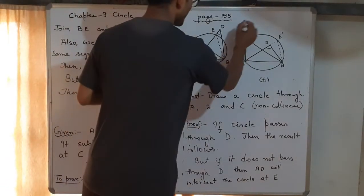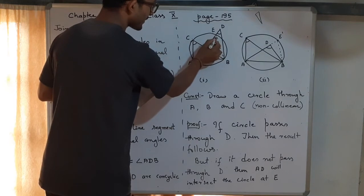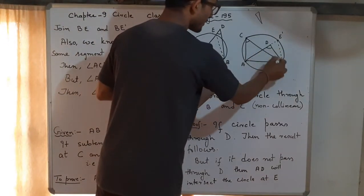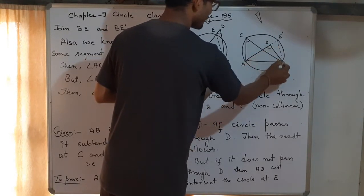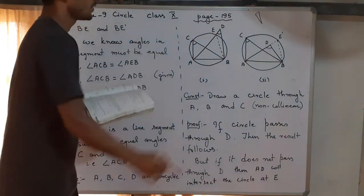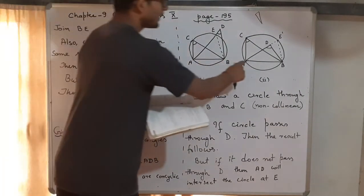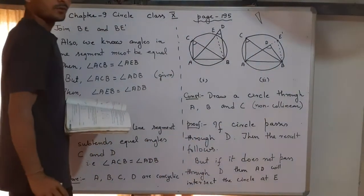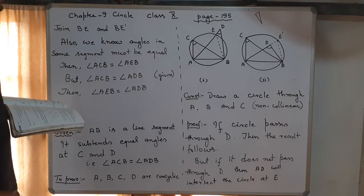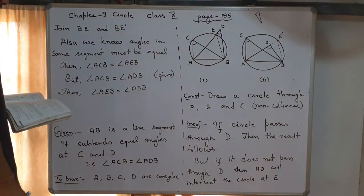But look at the triangle formed with points E and D. In this triangle, one of these angles is an exterior angle and the other is an interior angle. An exterior angle is always greater than any interior angle of the triangle — they cannot be equal. Whether D is outside or inside the circle, we get a contradiction: angle AEB cannot equal angle ADB. So this situation is impossible.